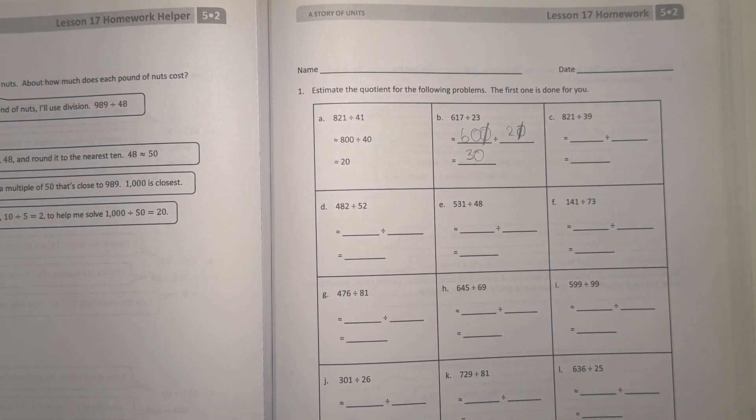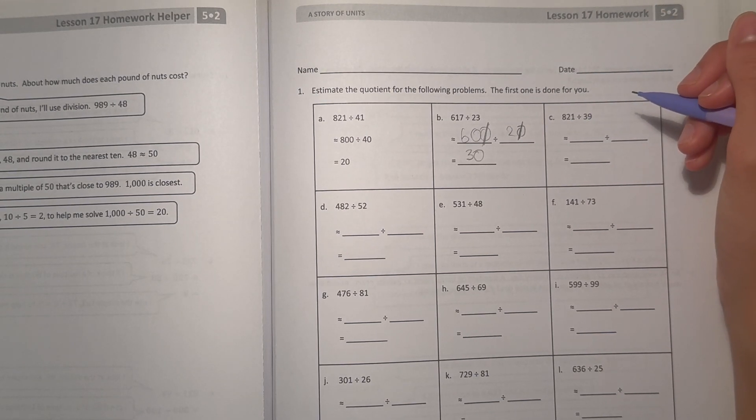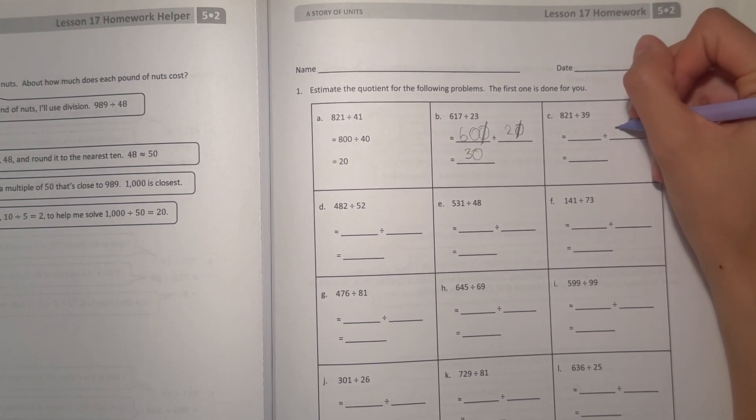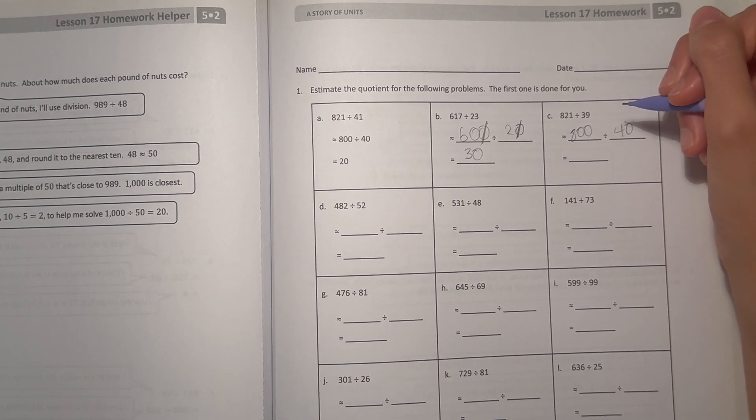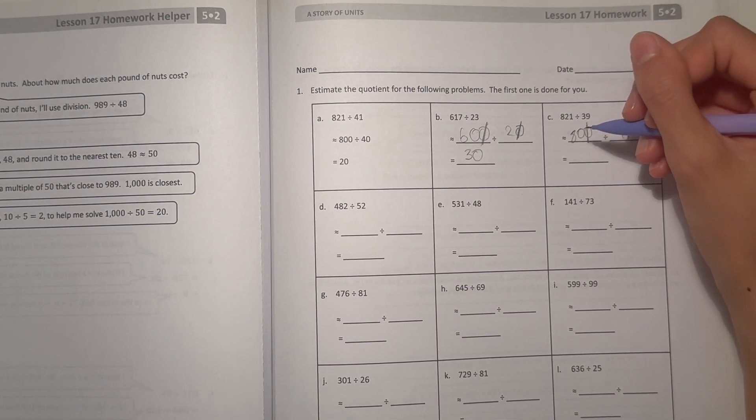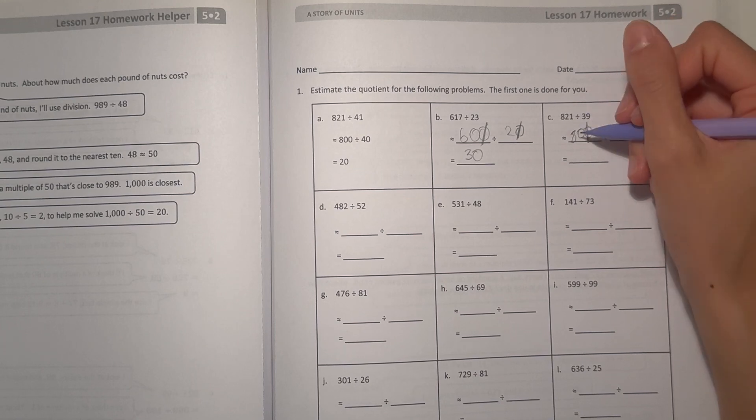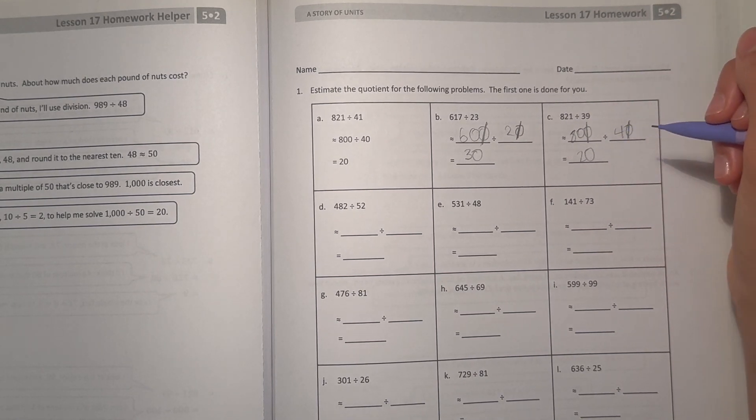All right, and C, 821 divided by 39. First we round 39 to 40, and 821 can round to 800, since 40 goes into 800. And we cross off the zeros, and 80 divided by 4, 8 divided by 4 is 2, add the zero. So our answer would be 20.